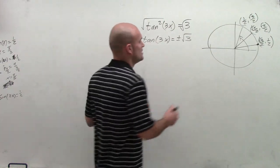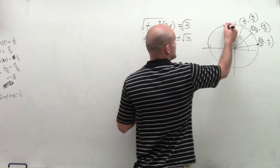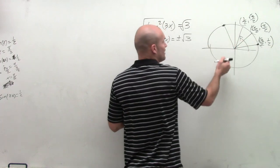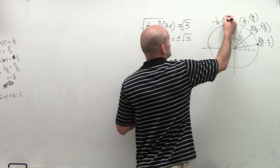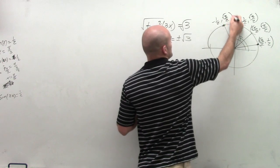Now, remember, it's plus or minus. So we also need to look at the negative version of that, which would be at 2 pi over 3. Because at 2 pi over 3, I now have a negative x value. But my y value would still be positive.